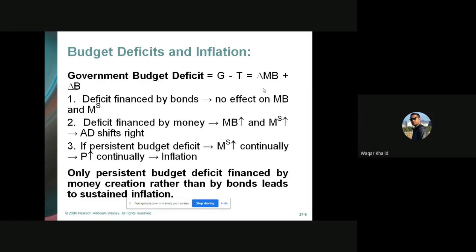There are several ways to understand why a deficit leads to an increase in the monetary base when public bond holdings do not increase. The simplest case is when the government treasury has the legal right to issue currency to finance the deficit. The government simply pays for spending in excess of tax revenue with new currency, which directly increases the monetary base, and the money supply rises with it through the process of multiple deposit creation.